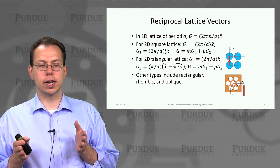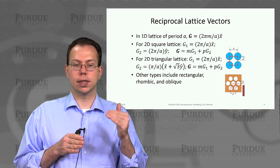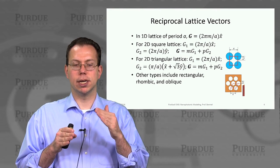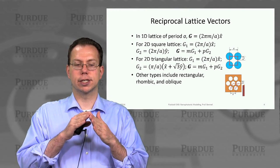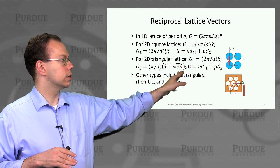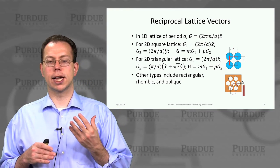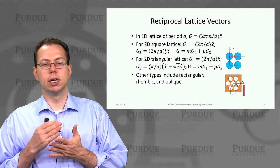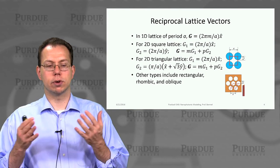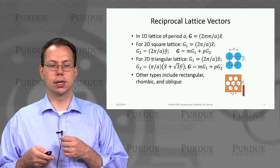For a triangular lattice, it's a little more complicated. You need something similar in the x direction if it's periodic in x, but in a triangular lattice there's an angle to the second periodic direction. You can write it down in the form x-hat plus square root of 3 times y-hat. The total reciprocal lattice vector is then a sum of integer multiples of those two elementary vectors. You could also treat other types of lattices, like rhombic or oblique lattices, using a similar approach.